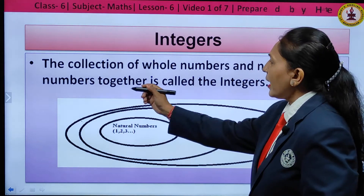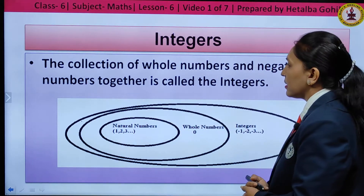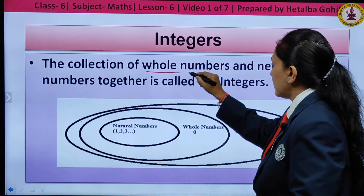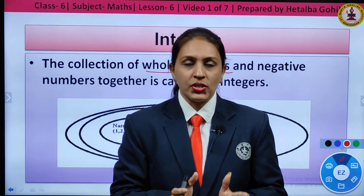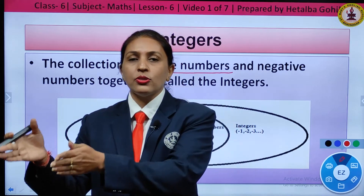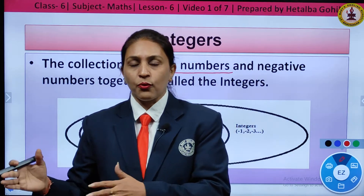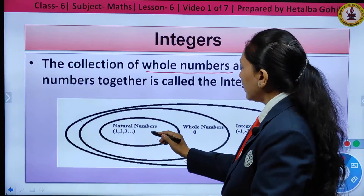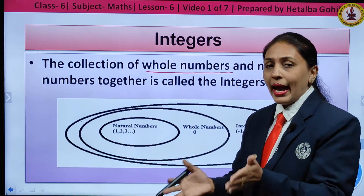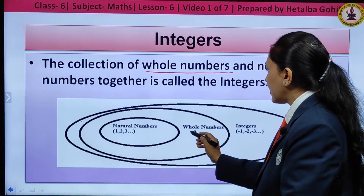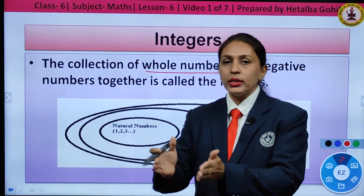Integers: the collection of whole numbers and negative numbers together is called integers. First we should know what natural numbers are, then whole numbers, then integers. Natural numbers are the counting numbers starting from 1, 2, 3, 4 and so on infinitely. When we make the group bigger by adding zero to natural numbers, we get the set of whole numbers — all natural numbers along with zero.